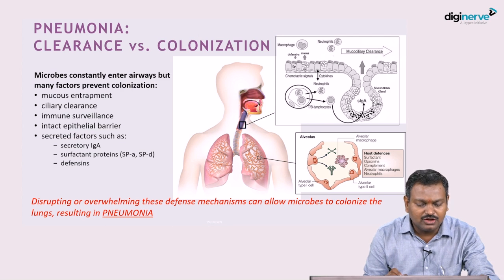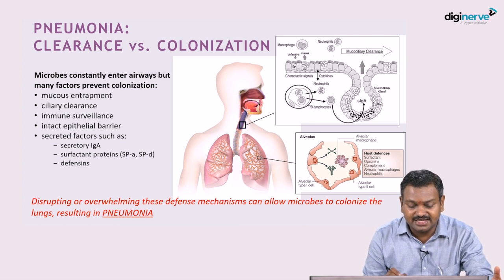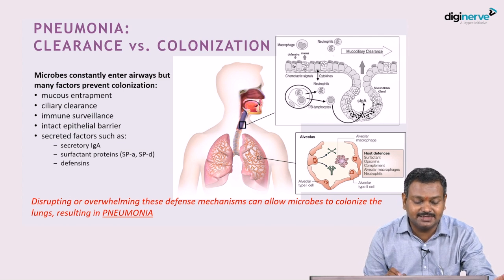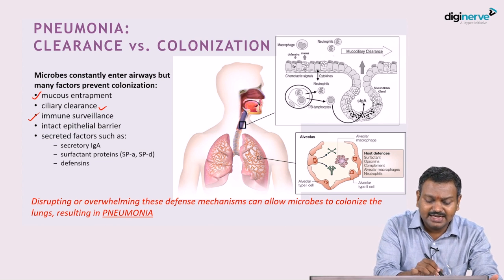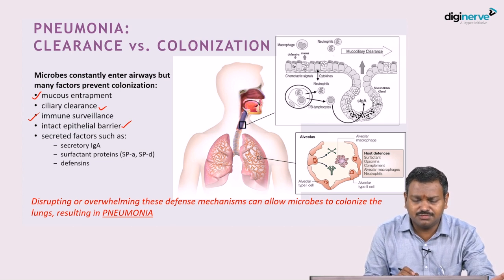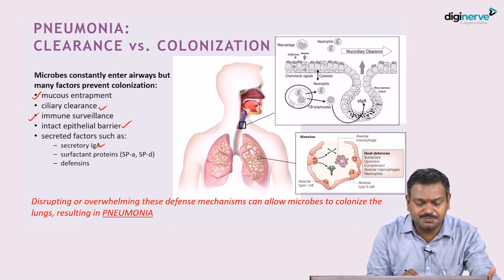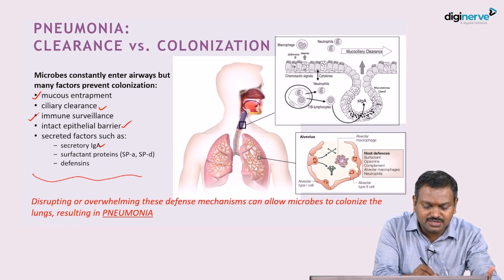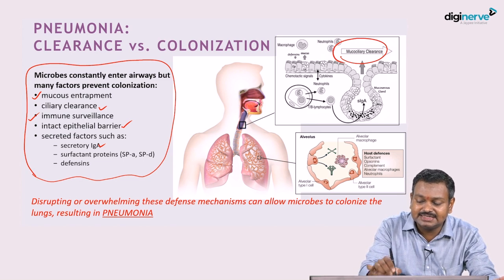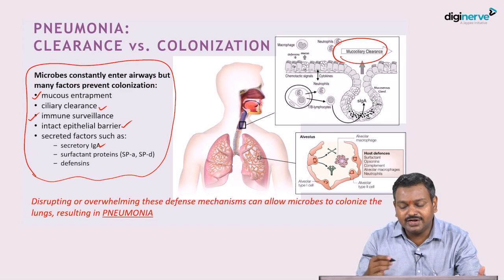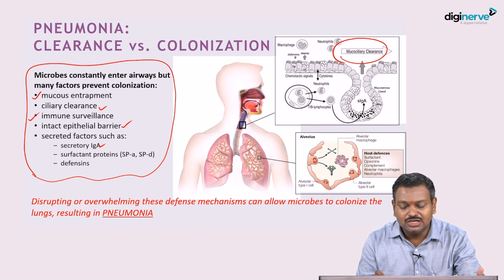Pneumonia occurs when there is an imbalance between clearance and colonization. The upper respiratory tract has normal commensal organisms, but many factors prevent bacterial colonization: mucous entrapment, ciliary clearance, immune surveillance, intact epithelial barrier, secretory IgA, surface proteins SP-A and SP-D, and defensins. The respiratory mucosa is lined by ciliated epithelium whose cilia beat outward, expelling microorganisms and foreign material.